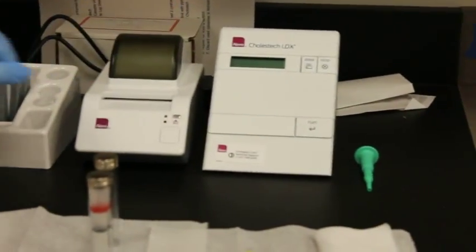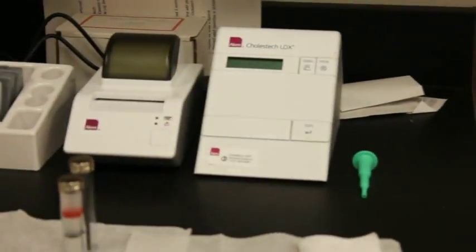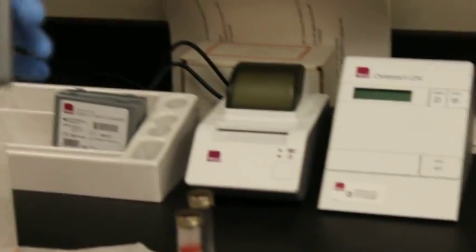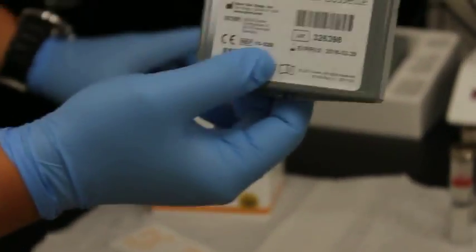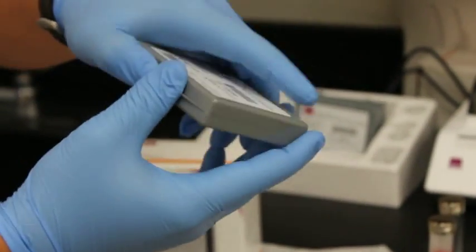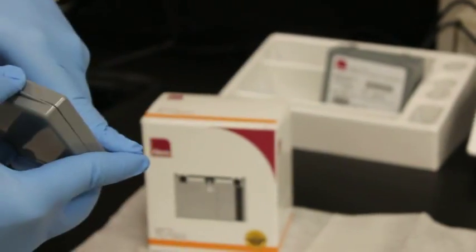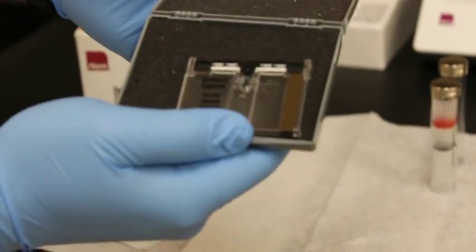The first thing we need to do before we actually test any samples from a subject is we need to calibrate this machine. What we have here is calibration cassettes. They are very similar to the cassettes that we're going to be putting the sample on, but these are just simply for calibration purposes. You can see the cassette sits in here. If we open this up, we hit run. It's going to say self-test running, and eventually this will open up.